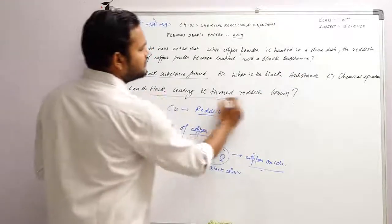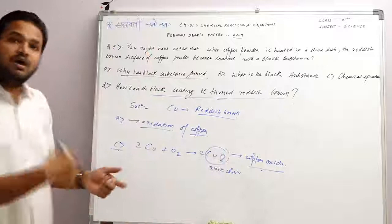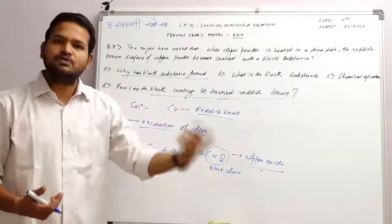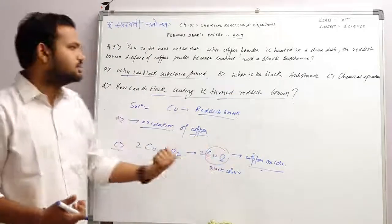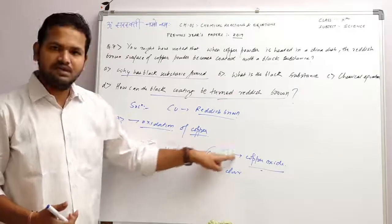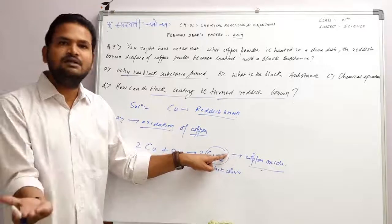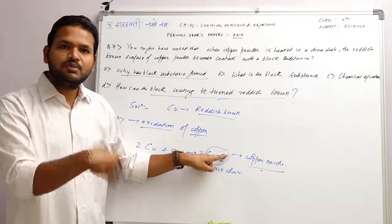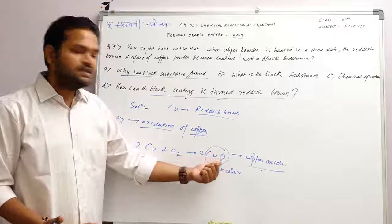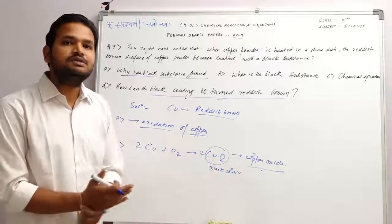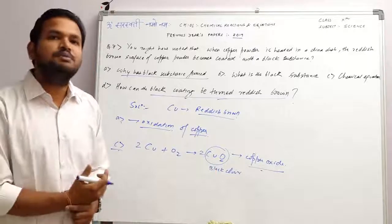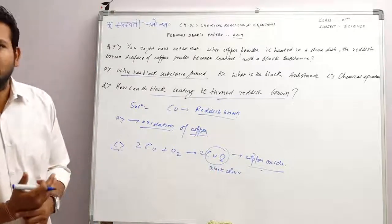How can the black coating be turned into reddish brown? The simple thing is that the black color is because of oxygen. If we remove the oxygen, it will become reddish brown. If we remove the oxygen, the process is called reduction, which we have also studied in the earlier lectures.